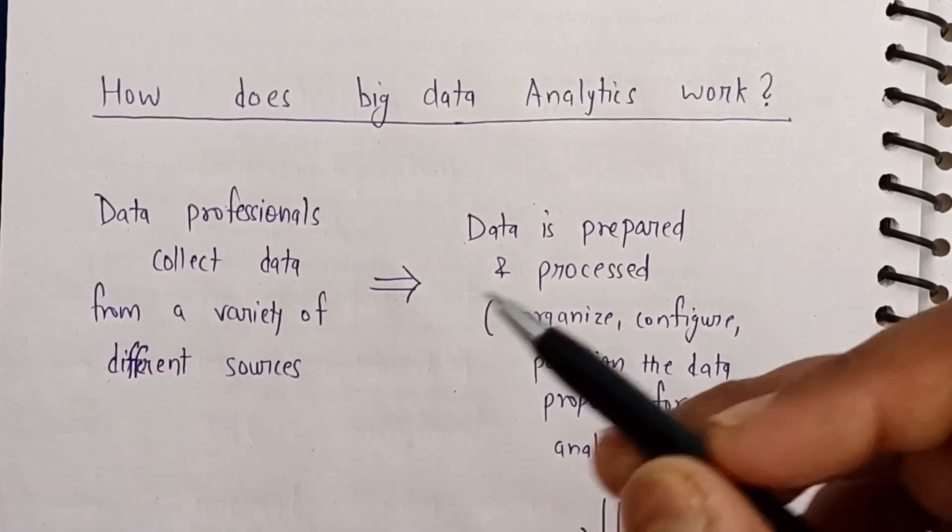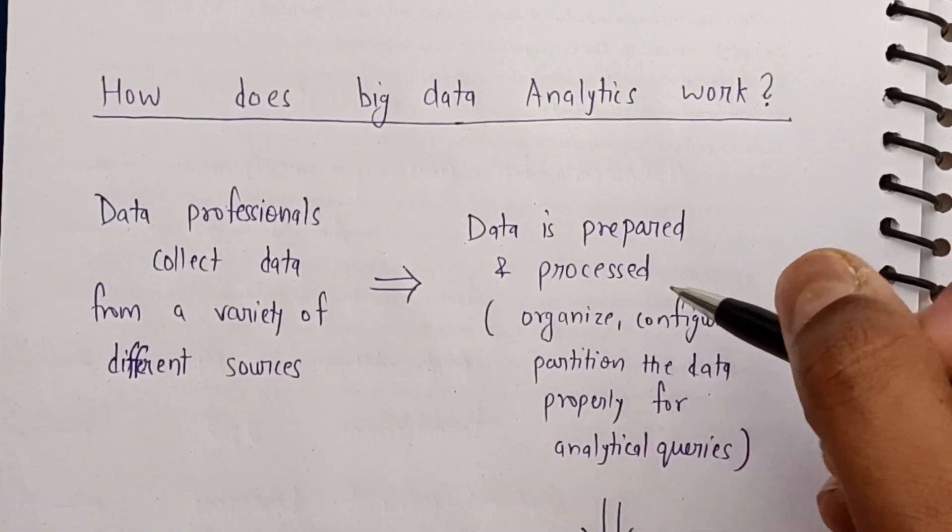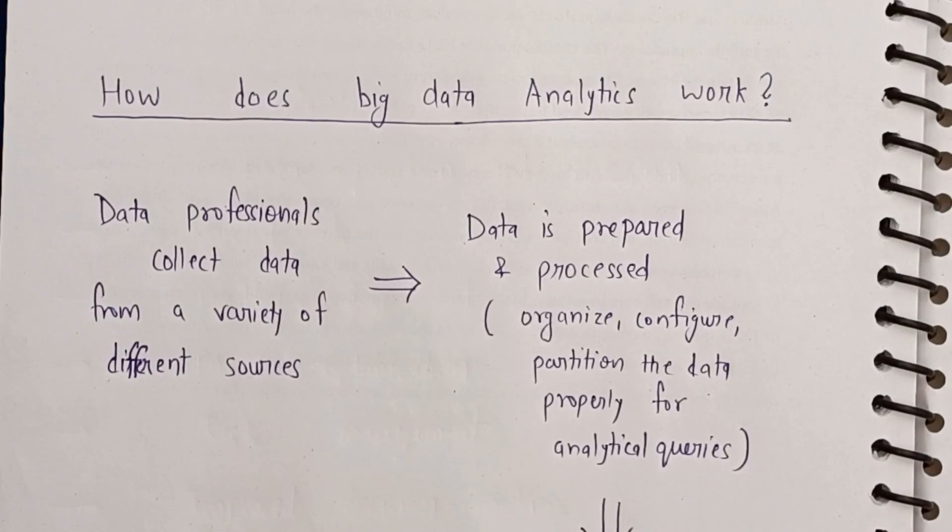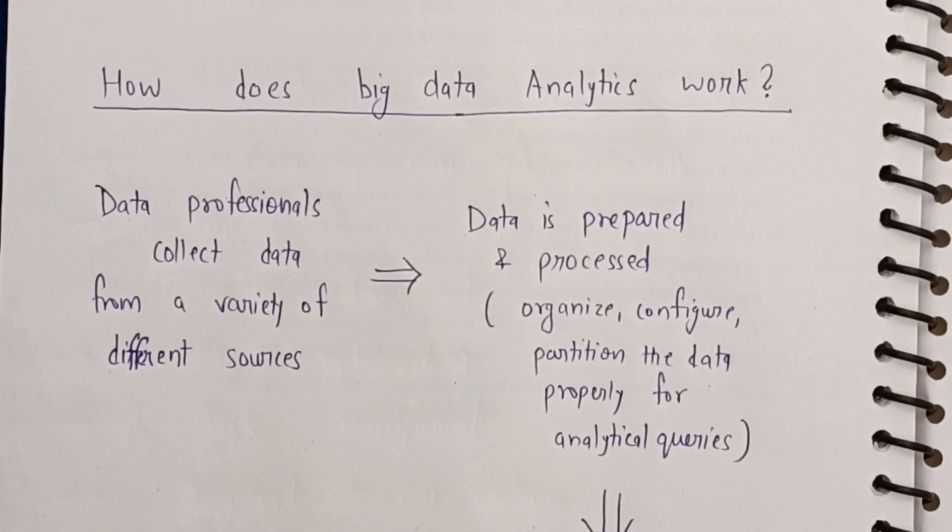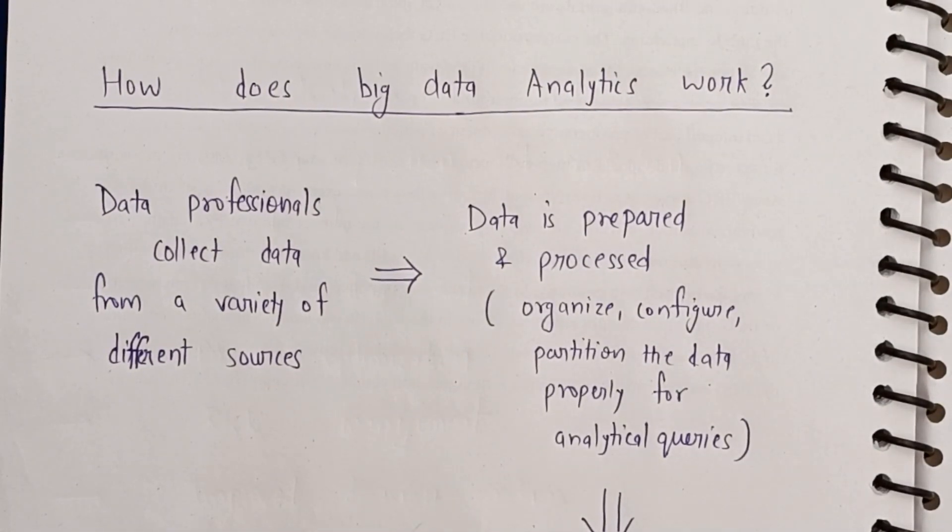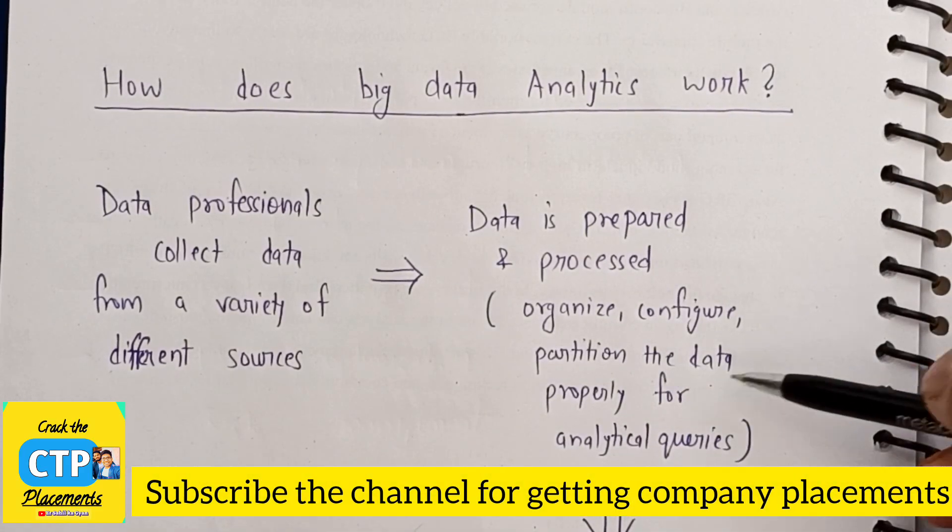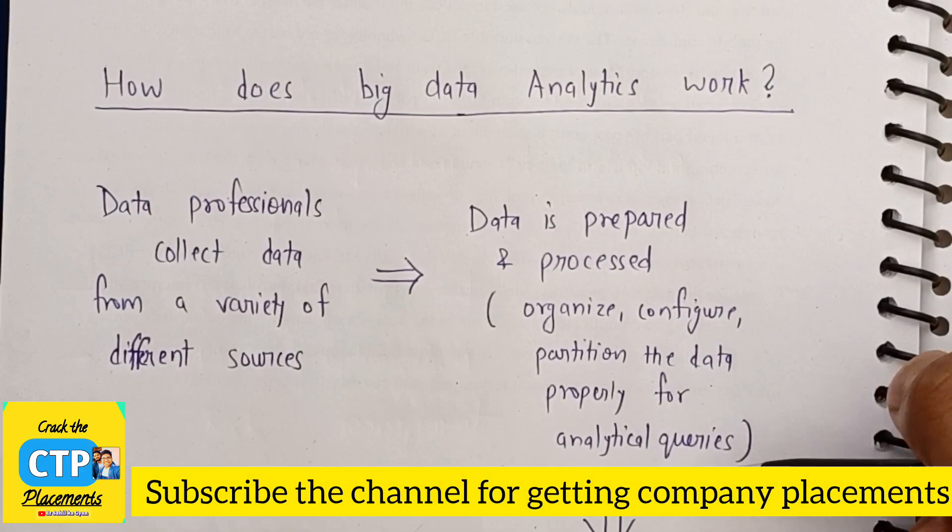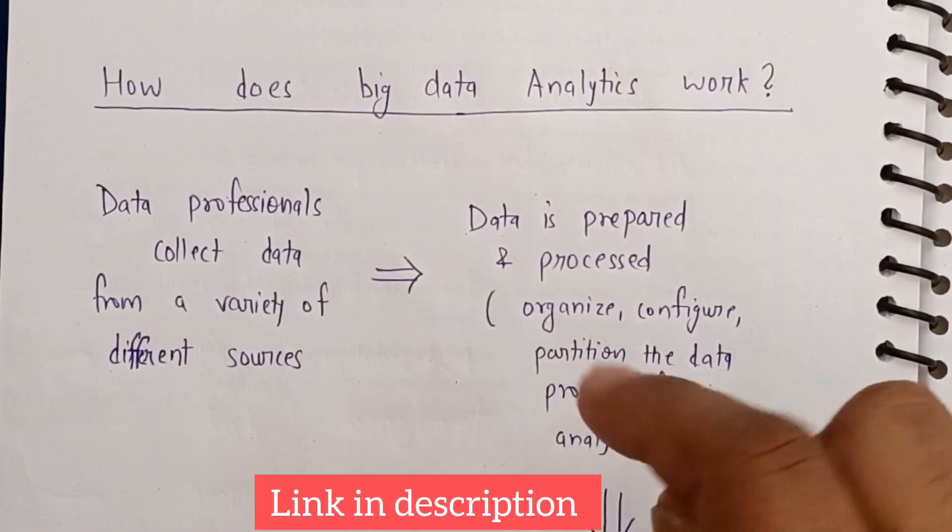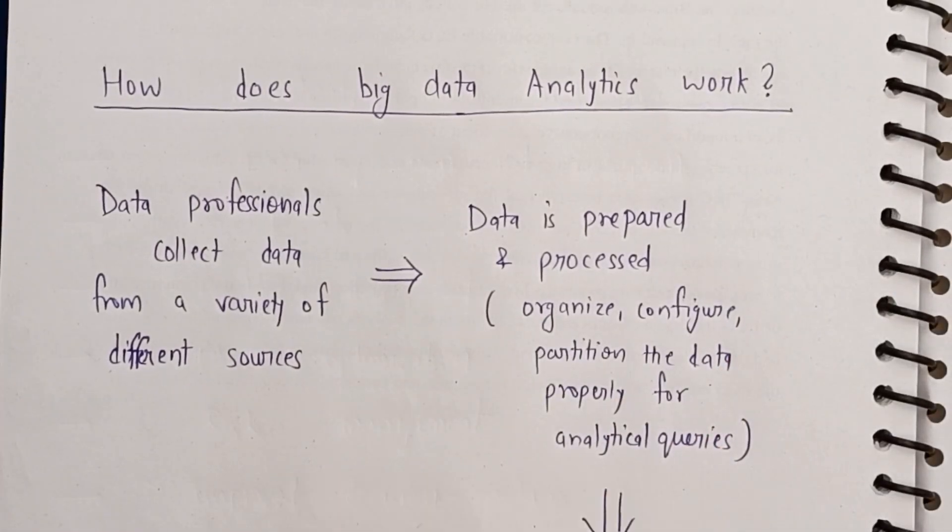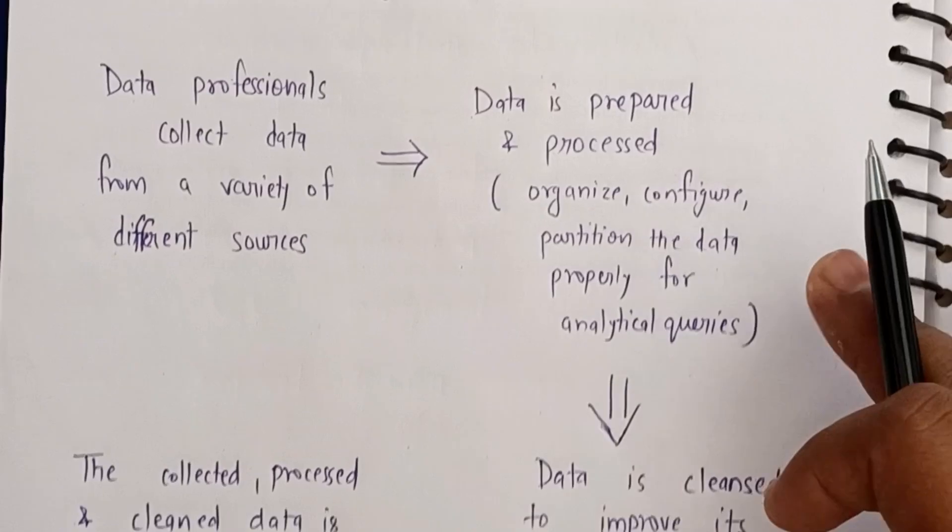In the second process, data is prepared and processed. In that case, data is first organized - which category should it go into, what type of data is it. Then it's configured and divided properly for analytical queries. In the third process, data is cleansed.